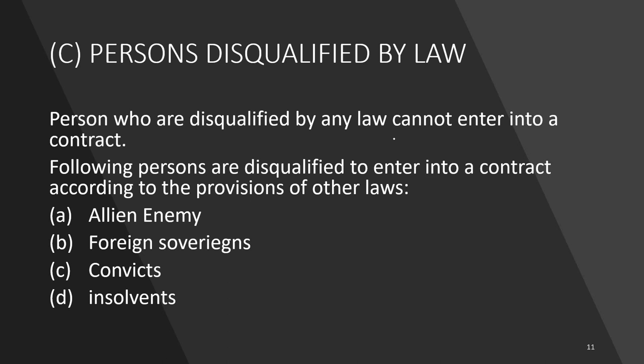Next provision: persons disqualified by law. Persons who are disqualified by any law cannot enter into a contract. The following persons are disqualified: first, alien enemies — an alien enemy is someone who belongs to a foreign nation whose country is at war with us. For example, if there is a war between India and Pakistan, somebody who belongs to Pakistan is both alien and an enemy. You cannot enter into a contract with an alien enemy and enforce it in court — it is void.